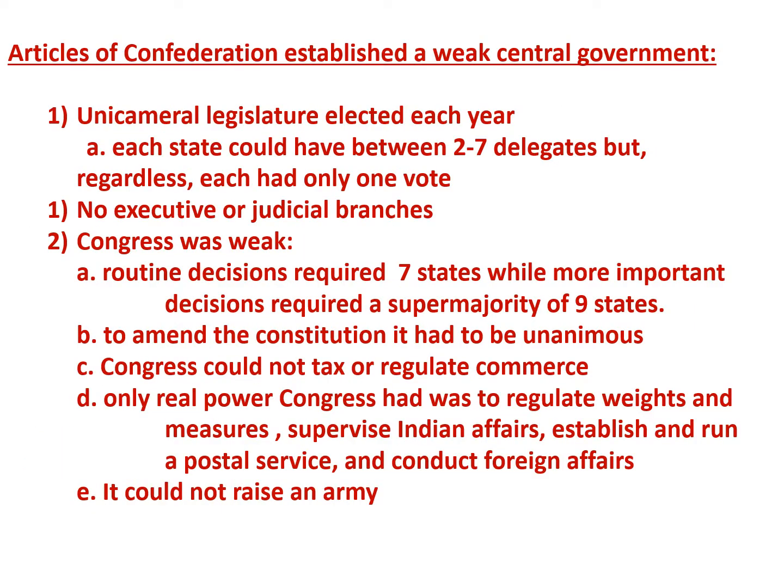Not surprisingly, the Articles of Confederation government provided for a very weak central government — an obvious reaction to the British power they had faced. It created a unicameral, one-house legislature elected every year. Each state could have between two and seven delegates, but regardless each had only one vote, so in voting all the states were equal. There was no executive, no president, no judicial department, and no national courts. It created a small series of committees to run the daily functions of the government when Congress was not in session.